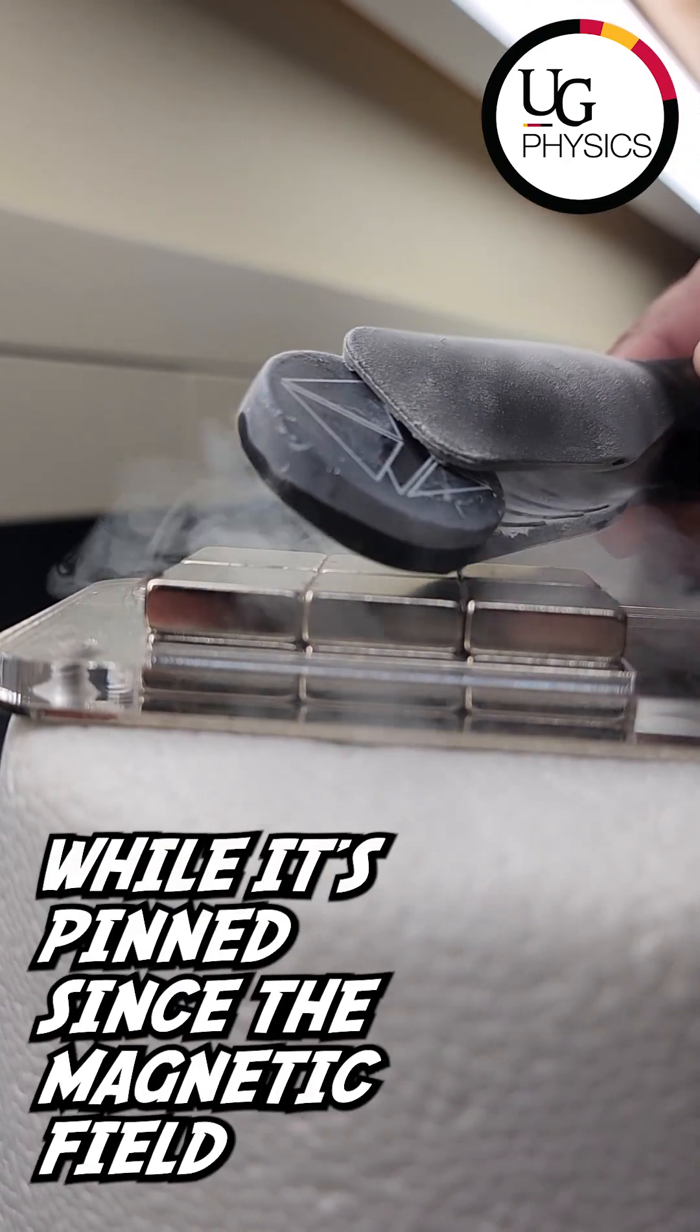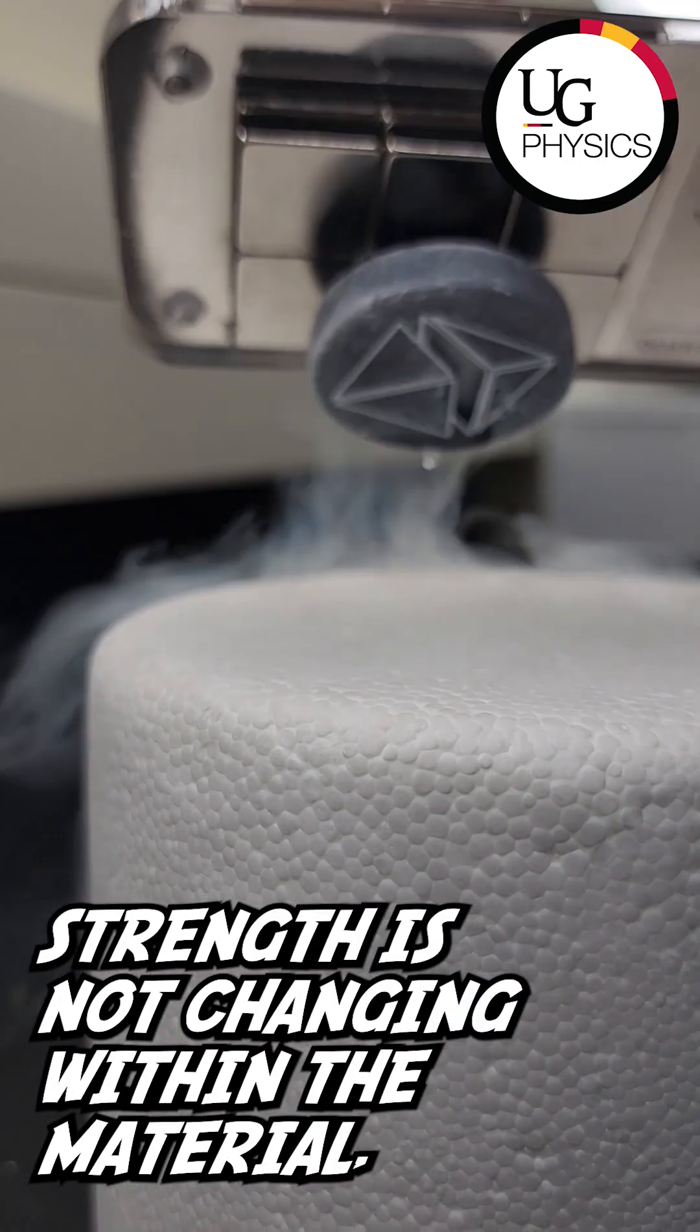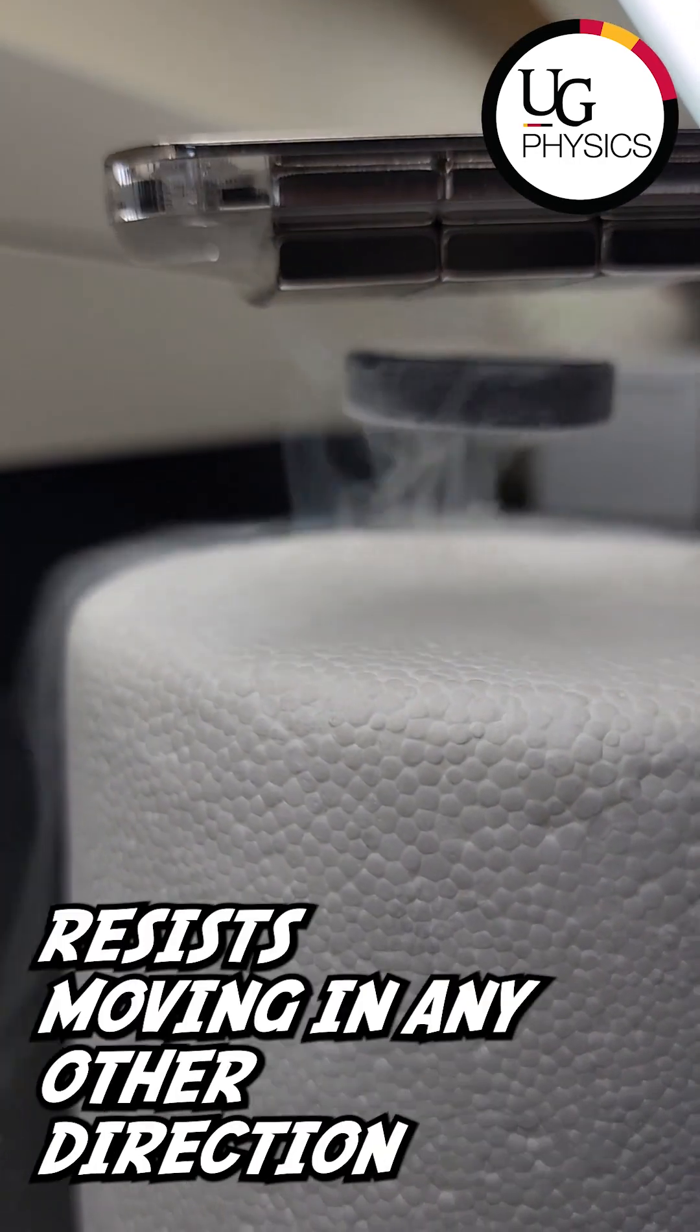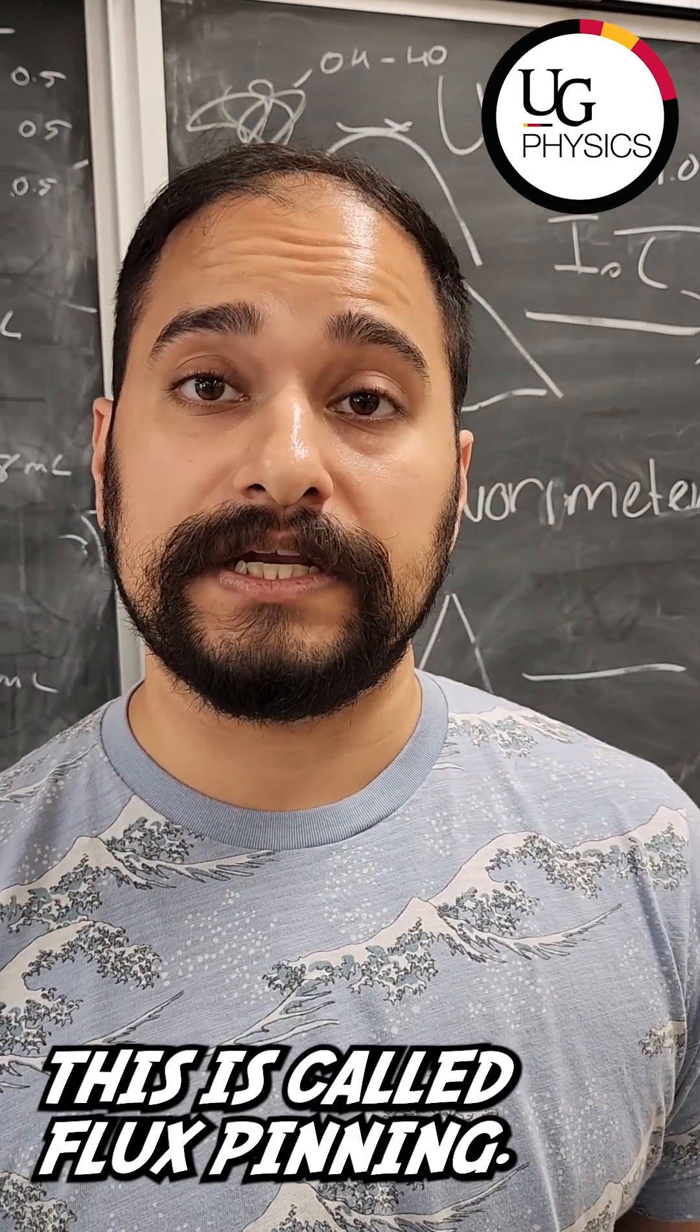You can still move the superconductor while it's pinned since the magnetic field strength is not changing within the material. However, the superconductor resists moving in any other direction while these flux tubes are held in place. This is called flux pinning.